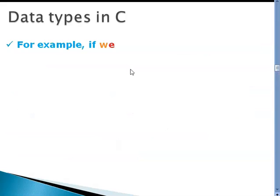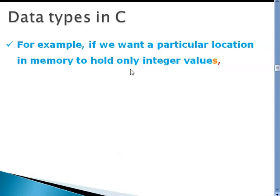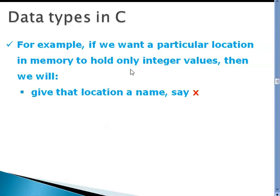With that in mind, let us see, for example, that if we want a particular location in memory to hold only integer values, then first we need to specify a name, an identifier for that memory location. Let us say x is that identifier.